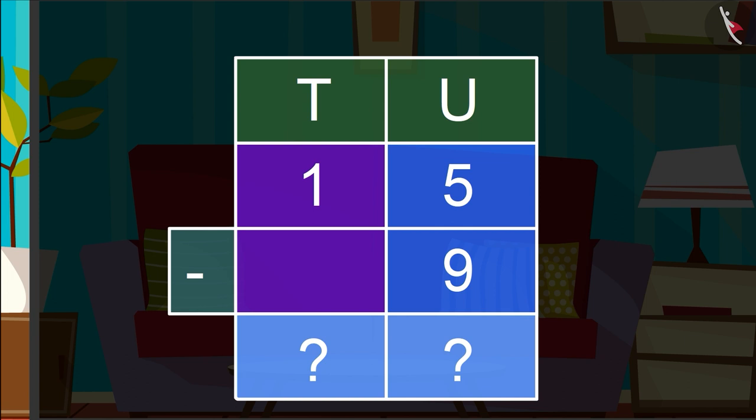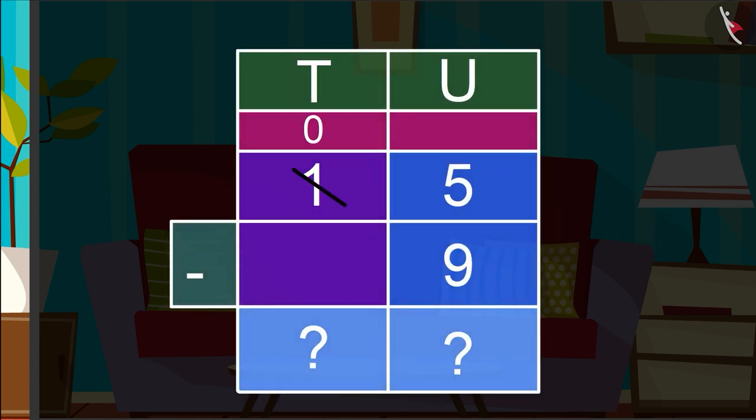We will first subtract the numbers written in the units place. Children, here 5 is a number smaller than 9, so we have to borrow a number from the tens number. Here, now the number 5 becomes 15. 15 minus 9 is equal to 6.